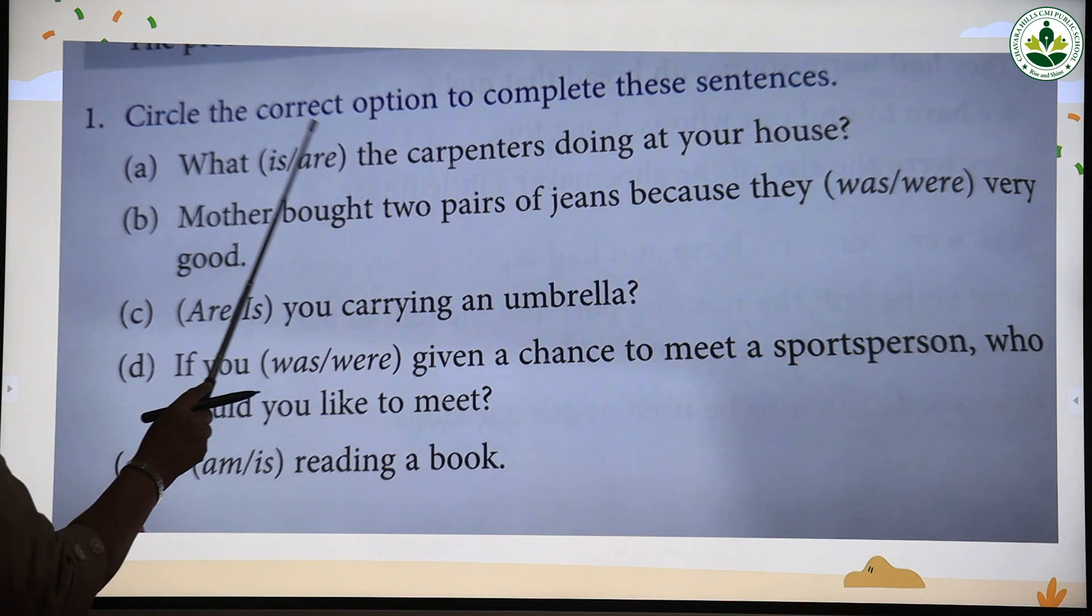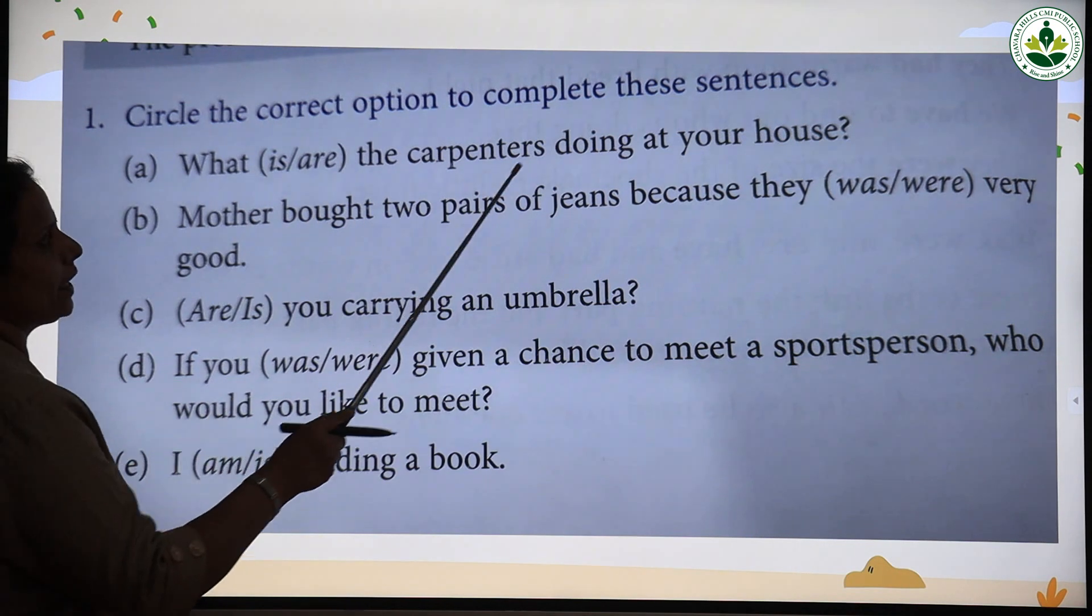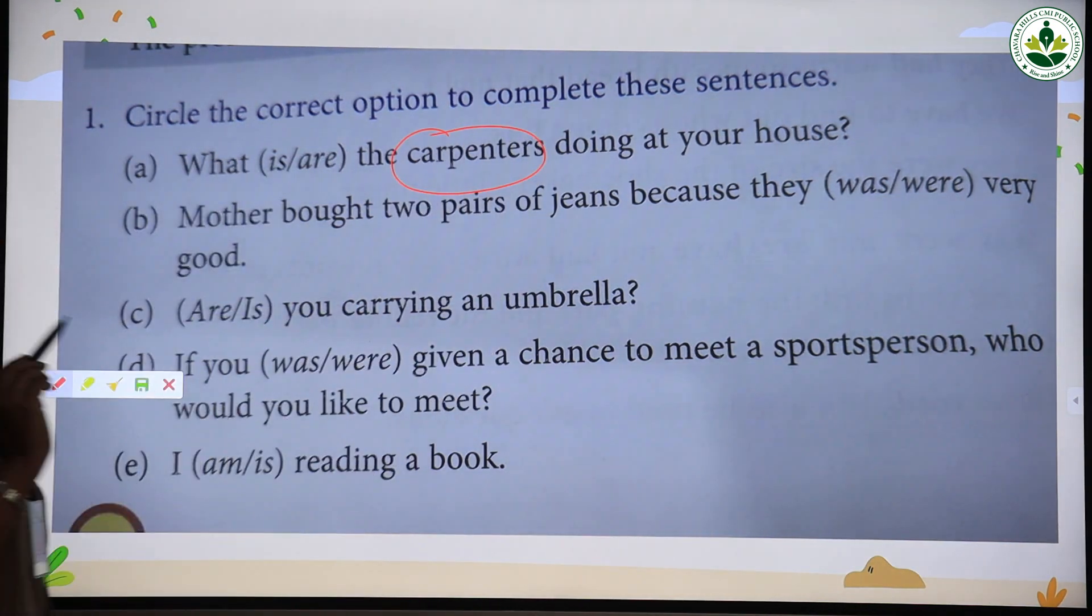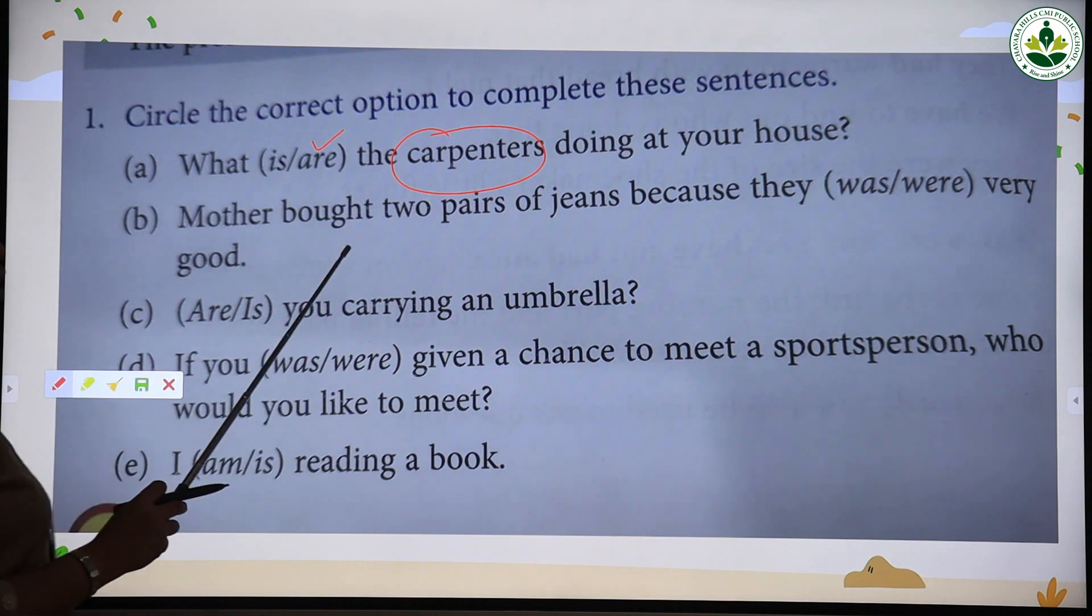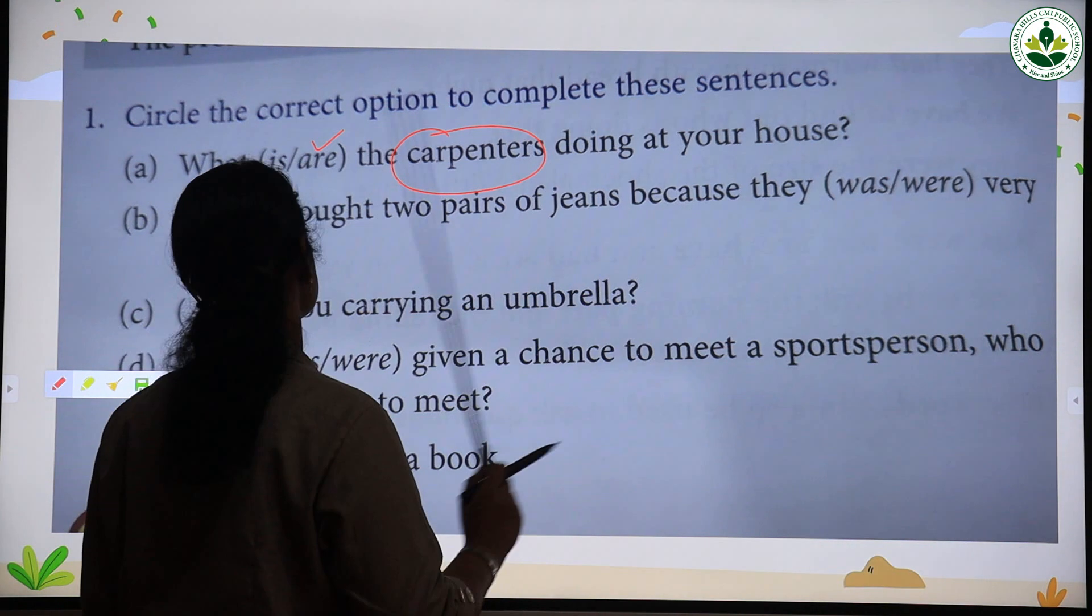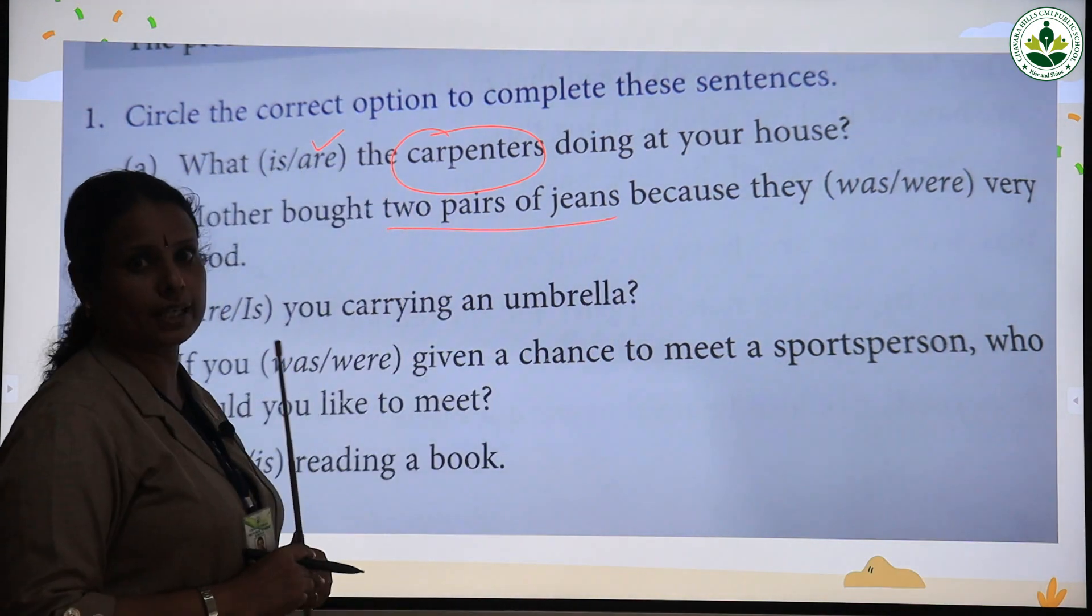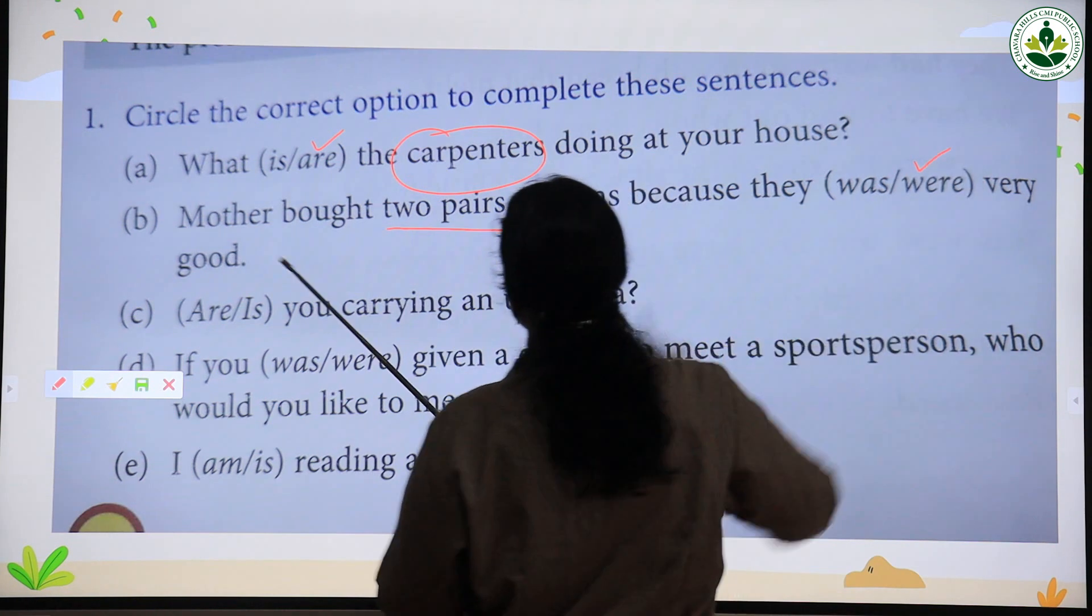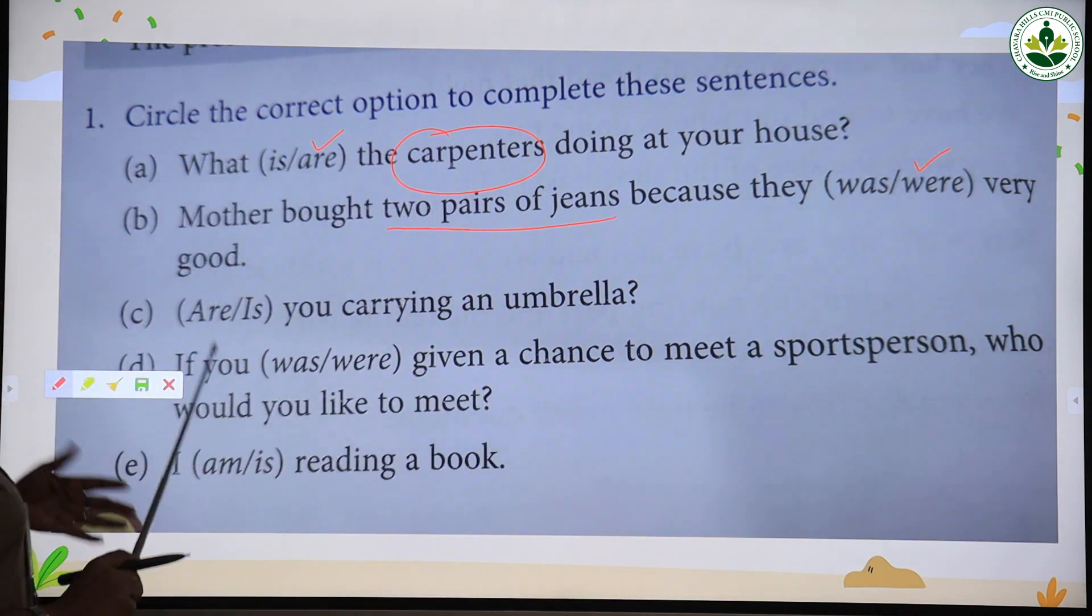Circle the correct option to complete the sentence. What are the carpenters doing at your house? Carpenters is a plural noun, so we use are. Mother bought two pairs of jeans because they were very good. Two pairs of jeans is plural, so we use were.